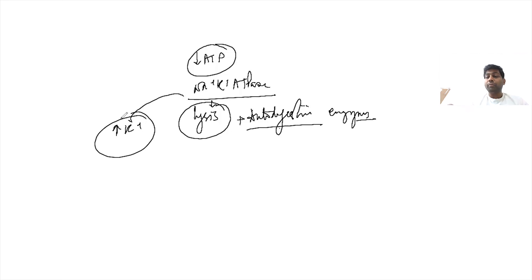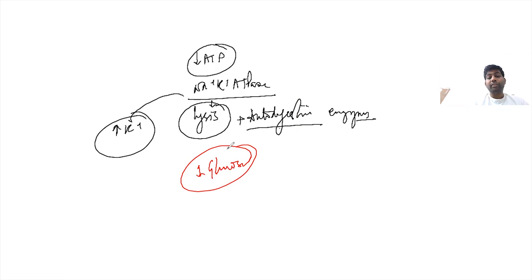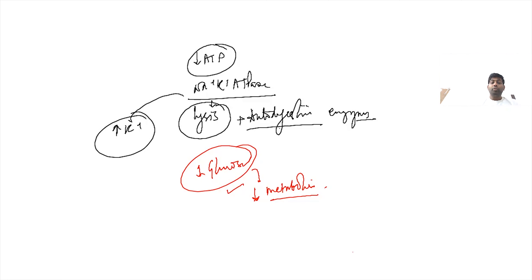At the same time, there is not only compromise in oxygen delivery and ATP synthesis, but also a decrease in glucose availability because aerobic respiration and oxygen delivery are both reduced. This leads to further decrease in metabolism. Now let us see what happens at the microvascular level due to ischemia.